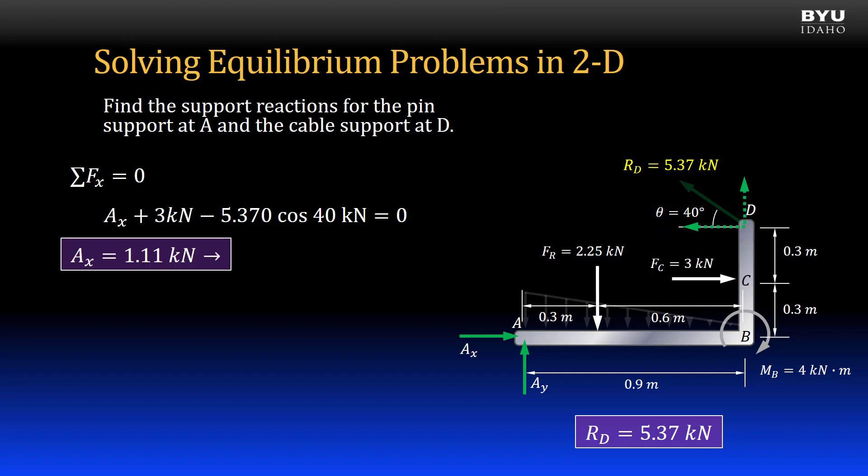Solving for Ax, I get positive 1.11 kN, meaning it is pointing to the right as shown in the free body diagram. Summing forces in the y direction to 0 gives positive Ay minus 2.25 kN plus the vertical component of RD equal to 0.